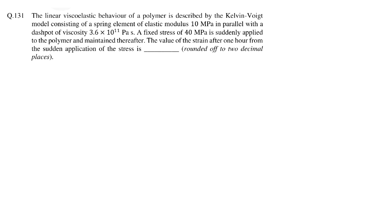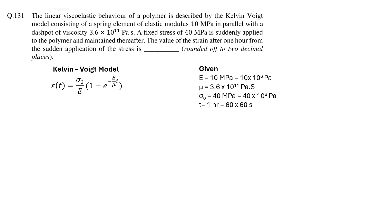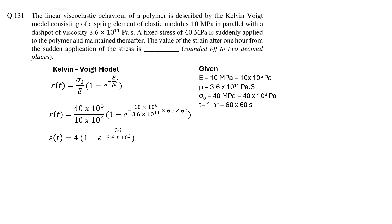Question 131 is relatively simple since this question has been asked several times. To solve this numerical we need to use the stress relaxation equation for the Kelvin-Voigt model, which is represented by this equation. As elastic modulus of the spring, viscosity of the dashpot, applied stress, and time are given, we can simply put these values in the equation and calculate the strain value after one hour. On simplification we find that the strain value is 0.38.